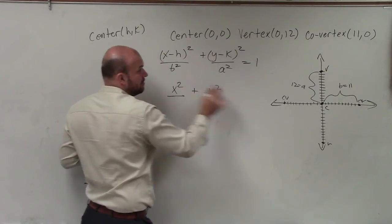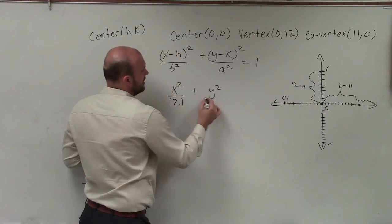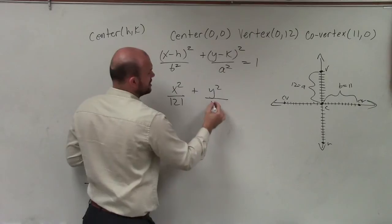Now, b squared, we know, which is 11 squared, so that's 121. And a squared, we know, which is 12 squared, which is 144.